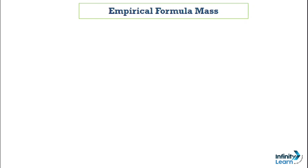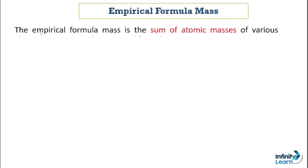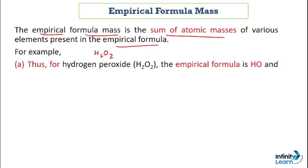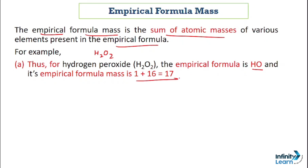Let's also discuss empirical formula mass. The empirical formula mass is the sum of the atomic masses of the various elements present in the empirical formula. For example, the empirical formula of hydrogen peroxide (H₂O₂) is HO. Its empirical formula mass is: atomic mass of hydrogen (1) + atomic mass of oxygen (16) = 1 + 16 = 17. So the empirical formula mass is 17.